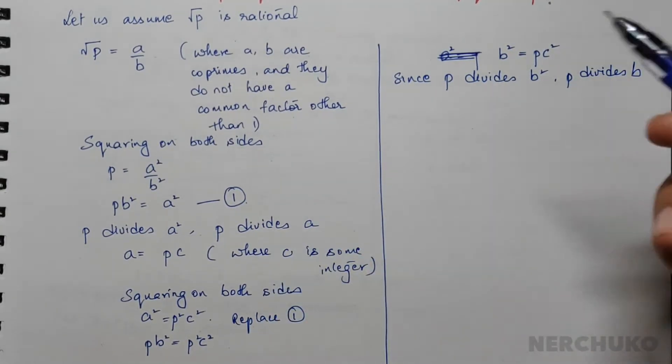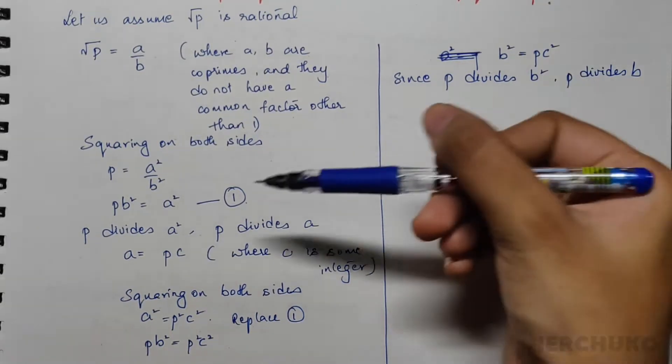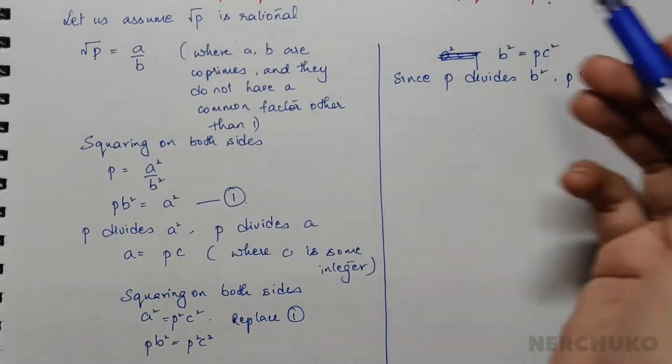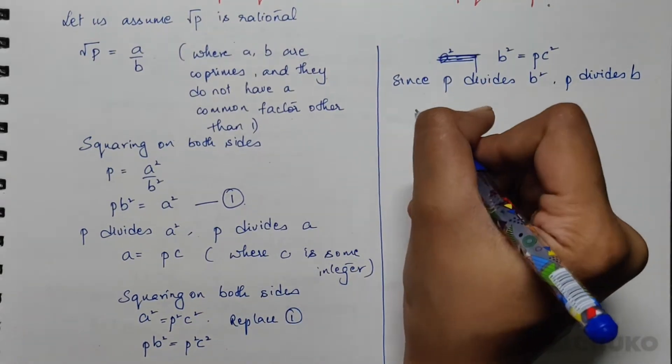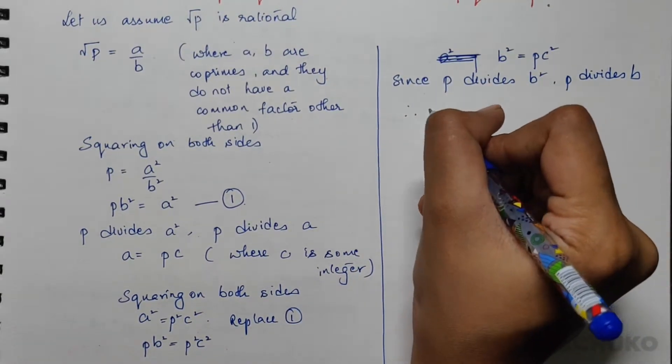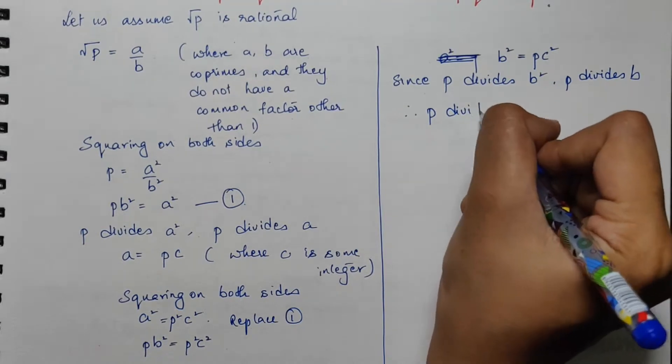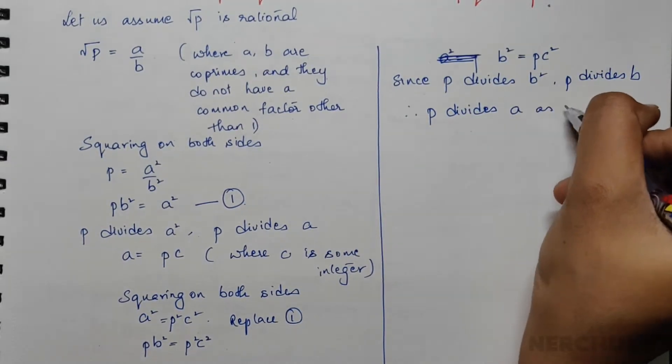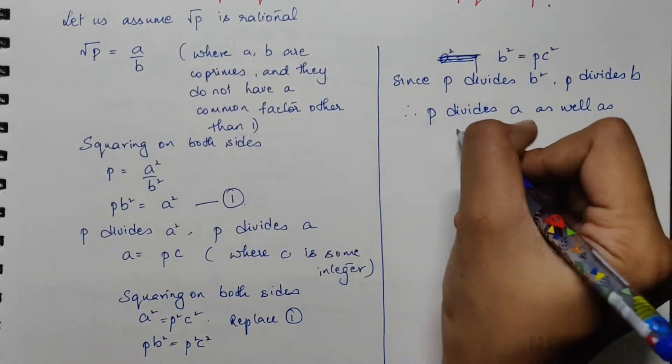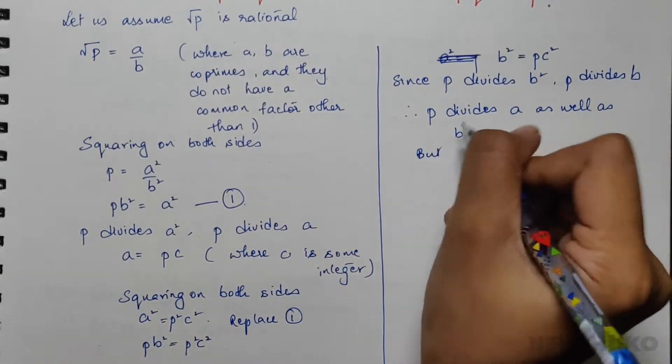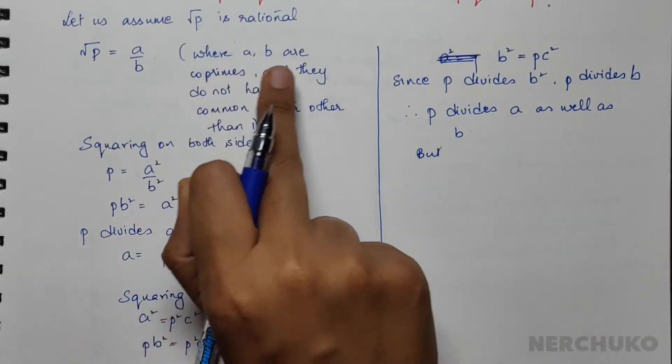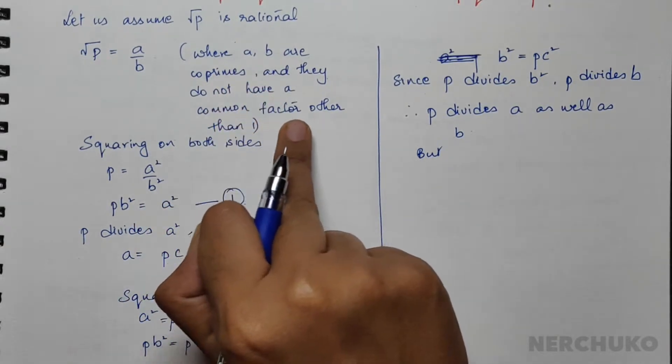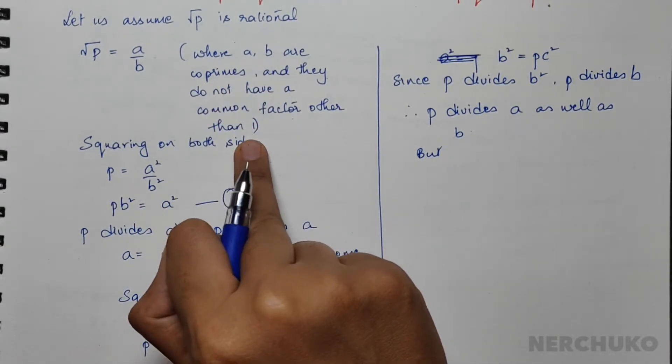From these two observations, we can see that p divides a as well as b. But our initial assumption that a and b are coprimes and they do not have a common factor other than 1 is contradictive.